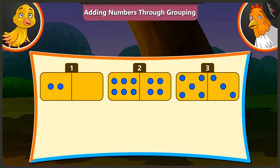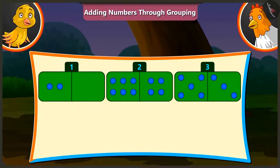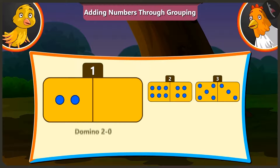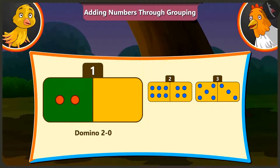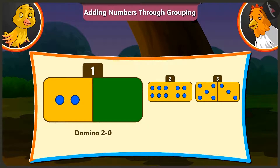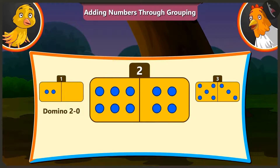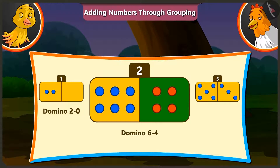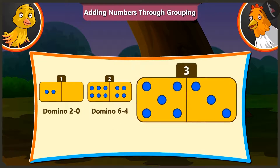Pilu, look! There are three domino cards kept here. The first card is domino 2, 0. The second card is domino 6, 4. And the third card is domino 5, 3.